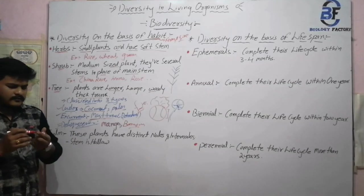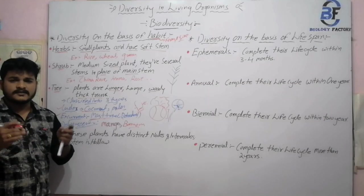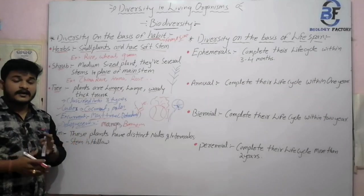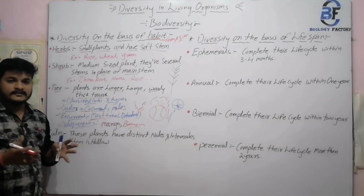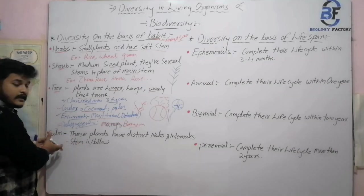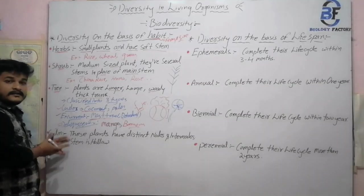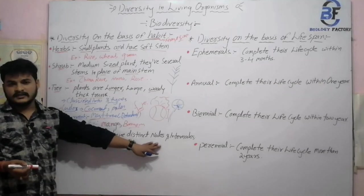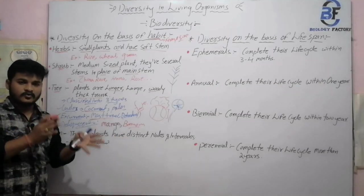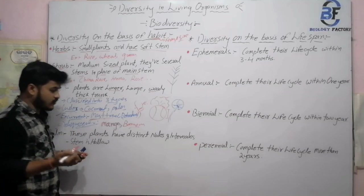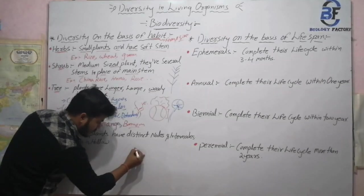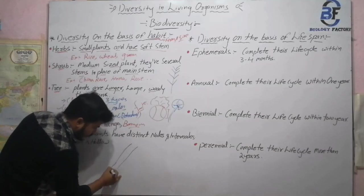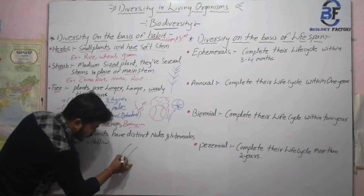The last category is culm. In culm, the plant has a bamboo-like structure — there are branches and a number of plants arise from this structure. These plants have distinct nodes and internodes. If you look at a bamboo, you can see the nodes clearly separated by internodes.